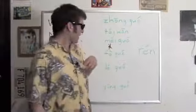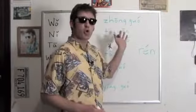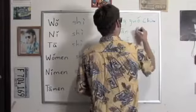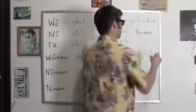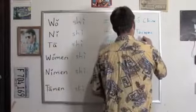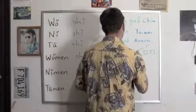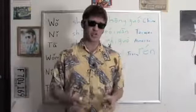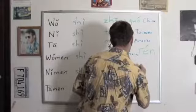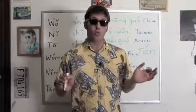Let's practice saying these one more time. 中国 — China. 台湾 — Taiwan. 美国 — America. 法国 — France. I have many more countries in the download for this chapter, so check it out. 德国 — Germany. 英国 — England.